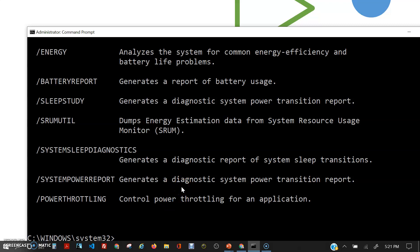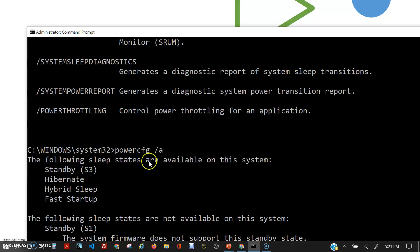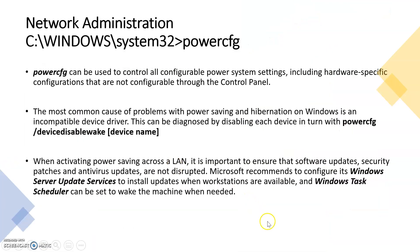Let me type in PowerCFG /A. Here are the sleep states that are available on my system. Now, one of the most common causes of problems with power savings and hibernation on Windows is an incompatible device driver. To diagnose a problem driver, you can use PowerCFG with the argument /devicedisablewake and then put in the device name. You can go one by one through the device drivers to figure out which one is the problem — disable it and then enable it.